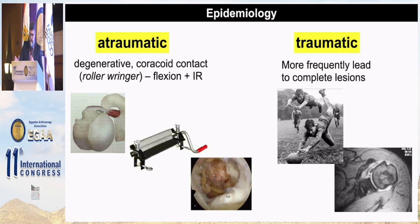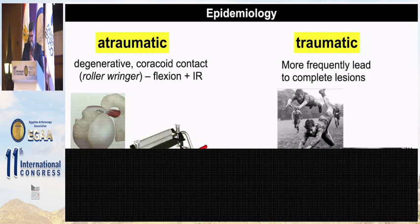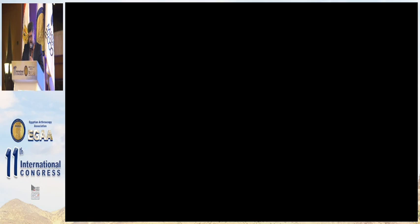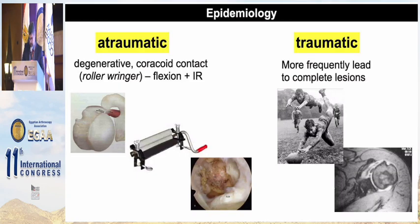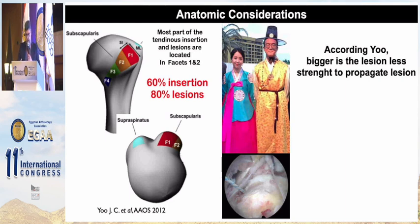These lesions can be atraumatic or traumatic. Atraumatic causes include degenerative conditions of the tendon and the roller-ring mechanism in flexion and internal rotation, which compresses the tendon against the coracoid. The most part of the tendinous insertion lesions are located in facets 1 and 2, as described by Yeo.